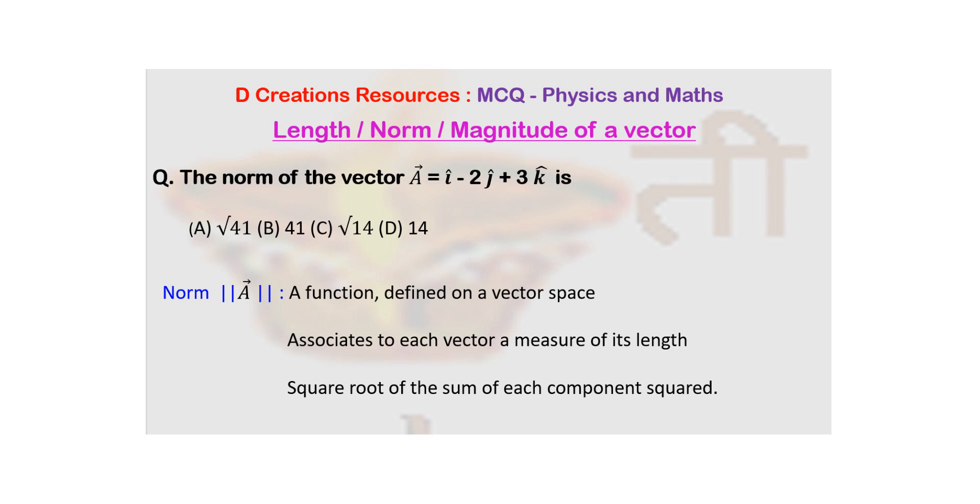Now norm is basically a function when it comes to vector spaces and it associates each vector with a measure of its length. So if you want to find out the norm you should know the concept of finding length or magnitude of a vector.